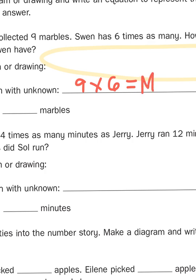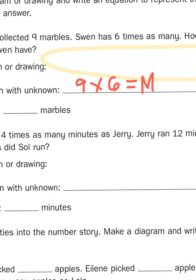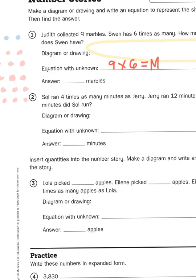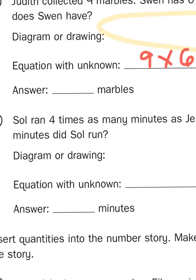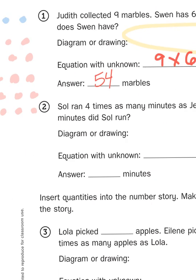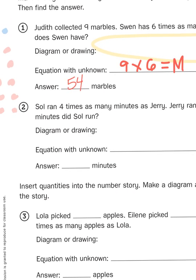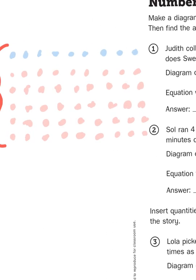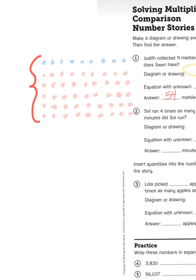The unknown is just basically a placeholder until we find the answer — this is a little bit of algebra. So what is nine times six? If you didn't know it off the top of your head, you could consult a multiplication division times table, and you would learn that nine times six is 54. So there is your answer: Swen has 54 marbles, and we used a diagram or an array to show it.